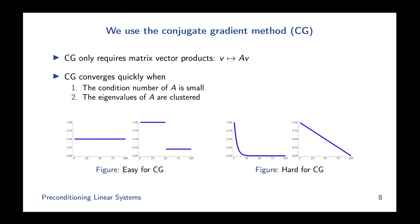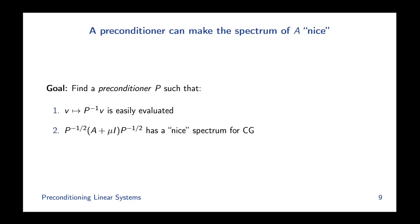The conjugate gradient method only requires matrix-vector products and converges quickly when the condition number of A is small or the eigenvalues are clustered. On the left, here are two spectra that are easy for CG: one is flat with condition number 1, and the other has only two distinct eigenvalues — a clustered spectrum. On the right, we have spectra that are hard for CG — both have slow decays and high condition numbers. Unfortunately, the first hard case is often what we see in the real world, where data has this kind of low-rank structure. Ideally, we'd squash those dominant eigenvalues down to make the spectrum flat.